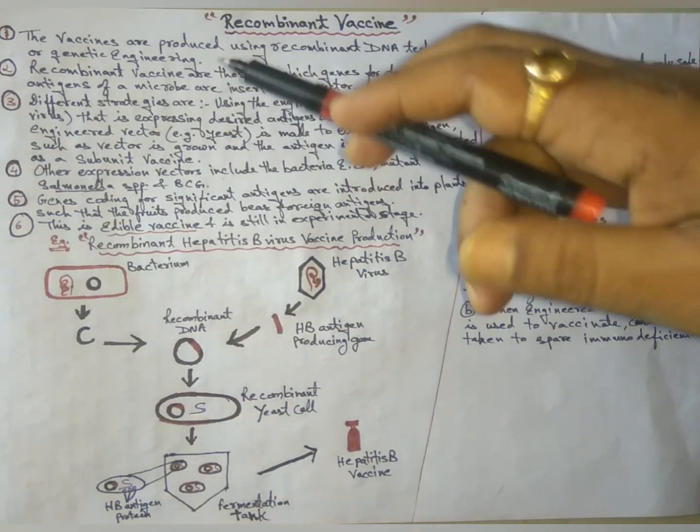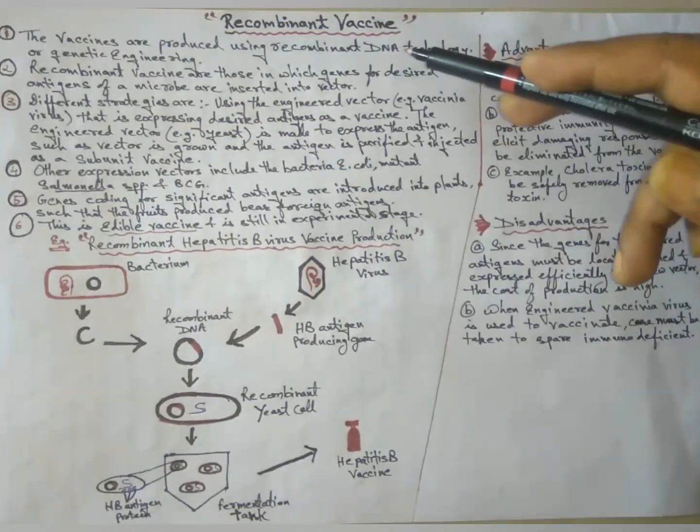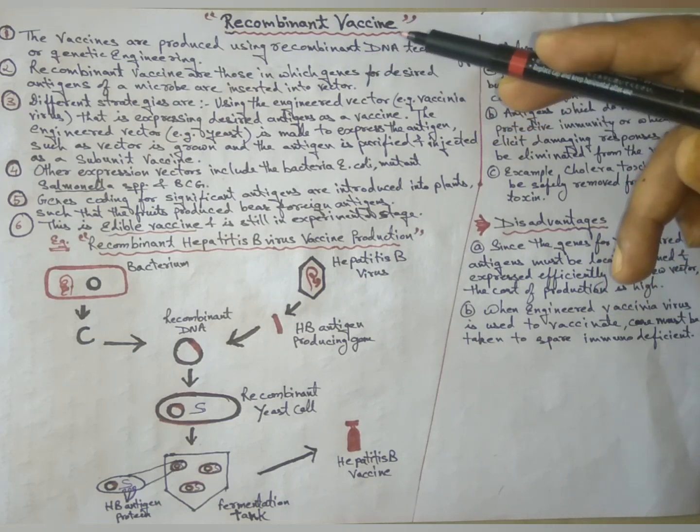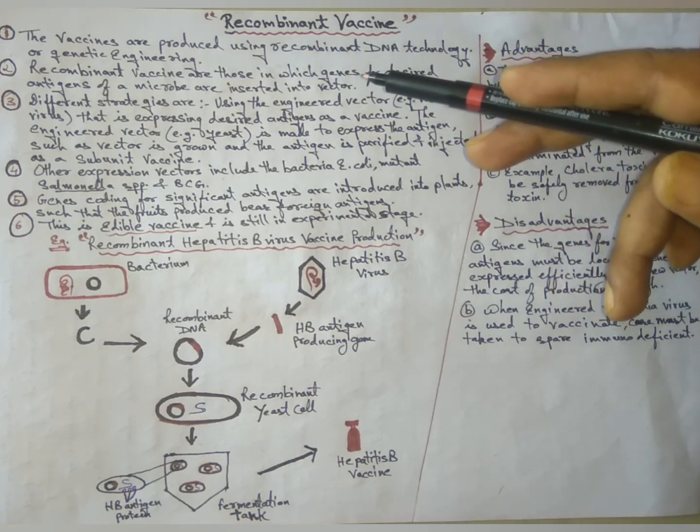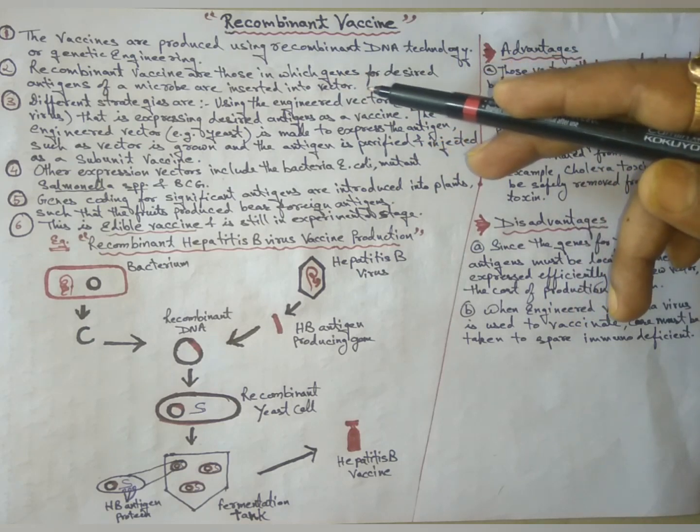The vaccines produced using recombinant DNA technology or genetic engineering are called recombinant vaccines. Recombinant vaccines are those in which genes for desired antigens of microbes are inserted into vectors.